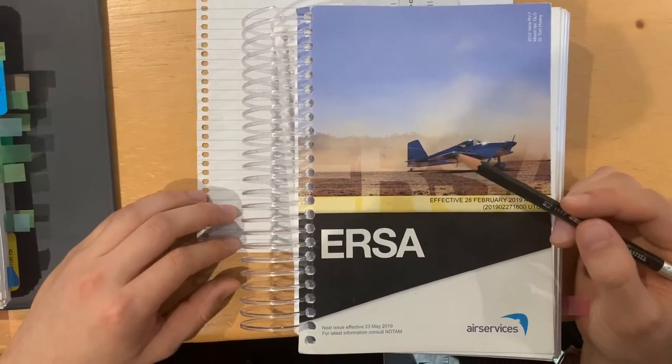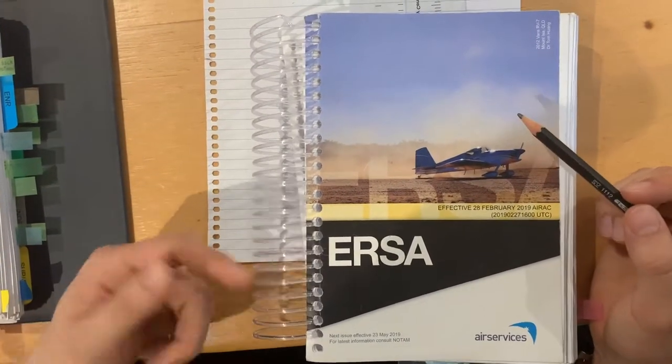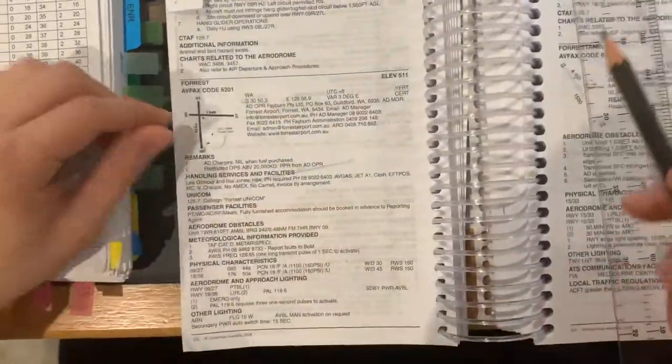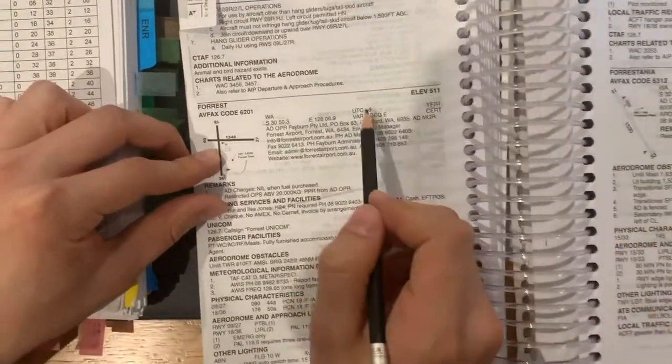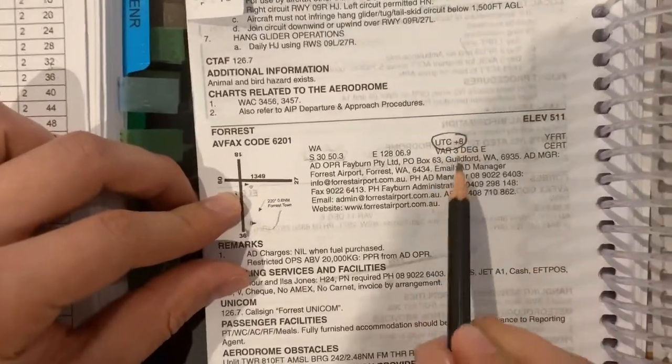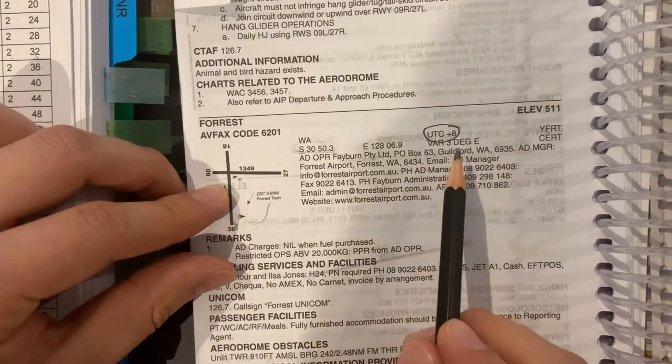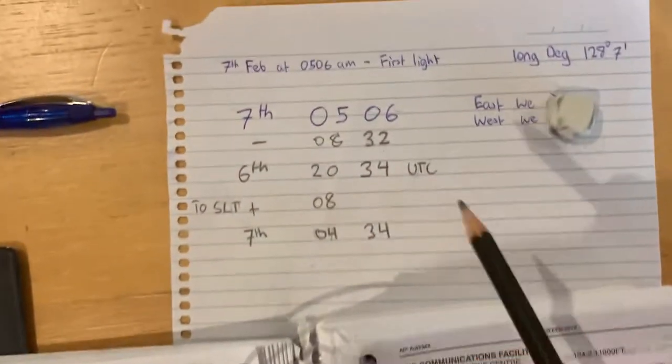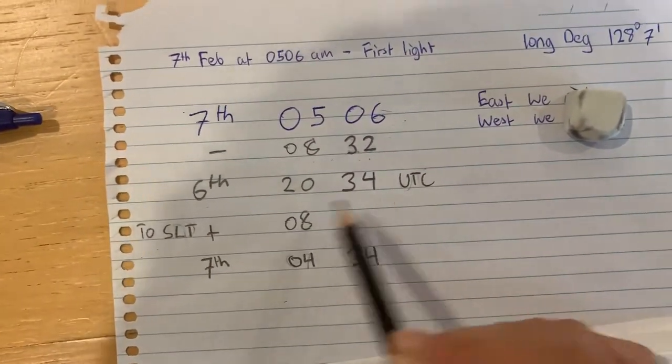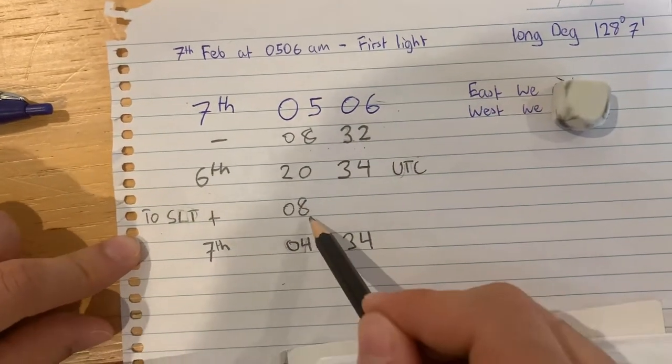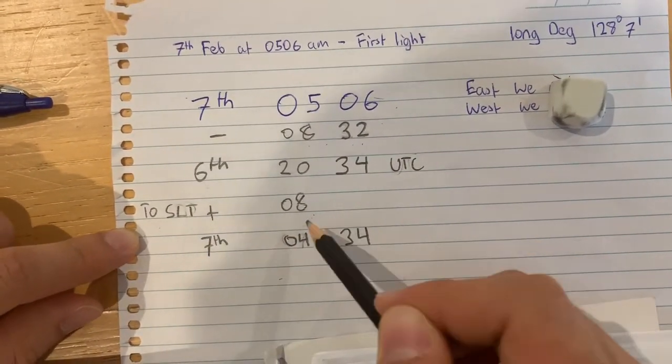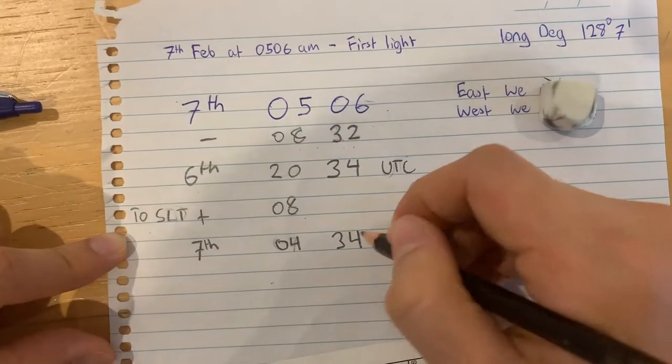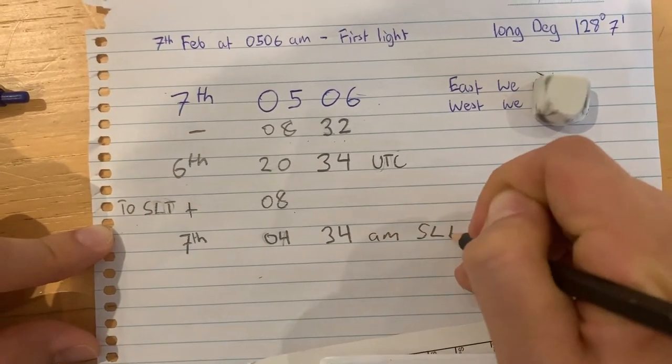Lastly, to determine the standard local time, we need the URSA. From the URSA, we have to add 8 hours, which is UTC plus 8, to the UTC which we received from the previous part, which was 20:34 on the 6th. We now add plus 8 to convert this to the standard local time, which is 04:34 am standard local time.